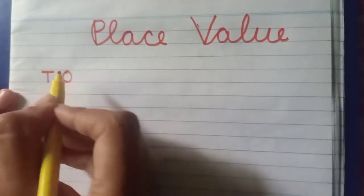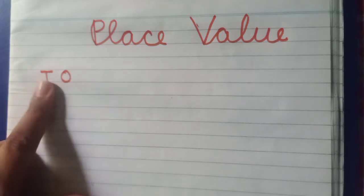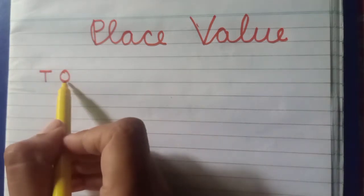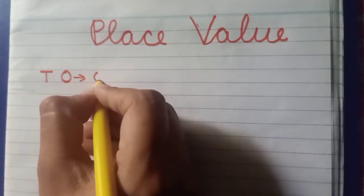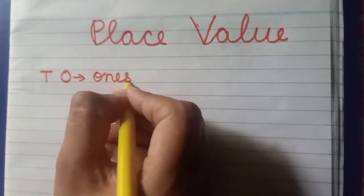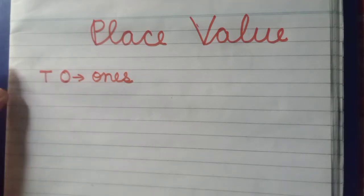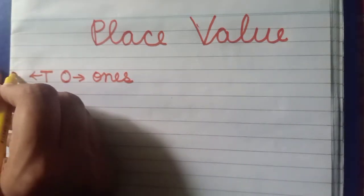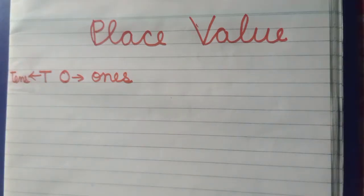As you already know, jab bhi hum counting likhte hain, we write it as T-O. You know the meaning of T-O — T aur O ka meaning kya hai? O stands for ones — O-N-E-S, ones place. And T stands for tens.